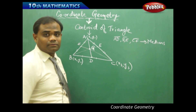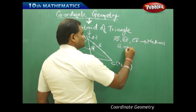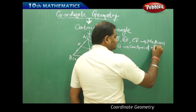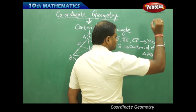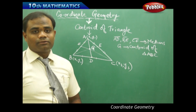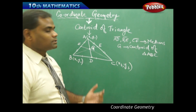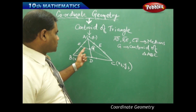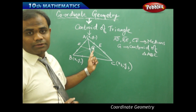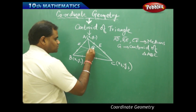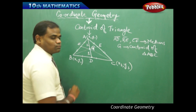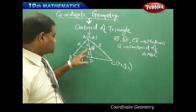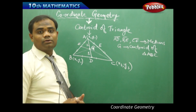The point of concurrence of all medians is called the centroid, generally denoted by G. To find the coordinates of the centroid, we use centroid properties. Interestingly, the centroid divides the median in the ratio 2:1, which is what we need to identify.